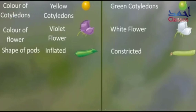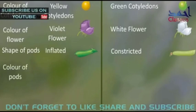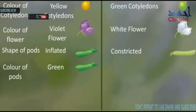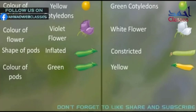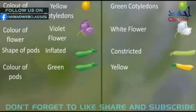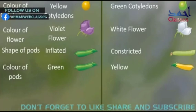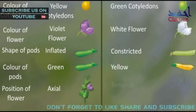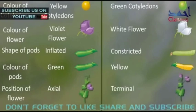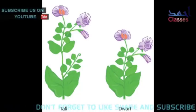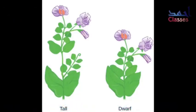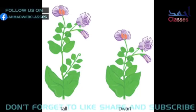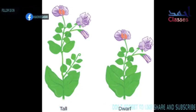5. The color of pod — green color pod and yellow color pod. 6. Position of flower — axial flower and terminal flower. 7. Length of the stem — long stem and short stem.